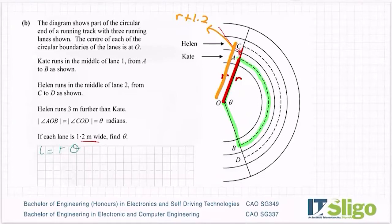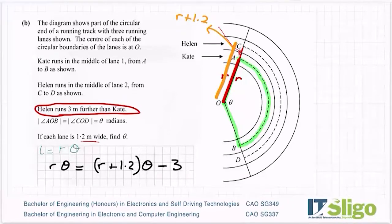Does that make sense? So whatever distance that R is, I don't know what it is. But in many cases, when you're comparing like this, the R's will end up cancelling. That's why I'm not worried too much about what the R is at this point in time. So Kate is R, Helen is R plus 1.2. So if we figure out how much they ran, then let's compare how much they ran. So Helen runs three meters further. So would you agree that I could write down R theta then is the same as R plus 1.2 theta, but I'd have to subtract off the three meters from it.